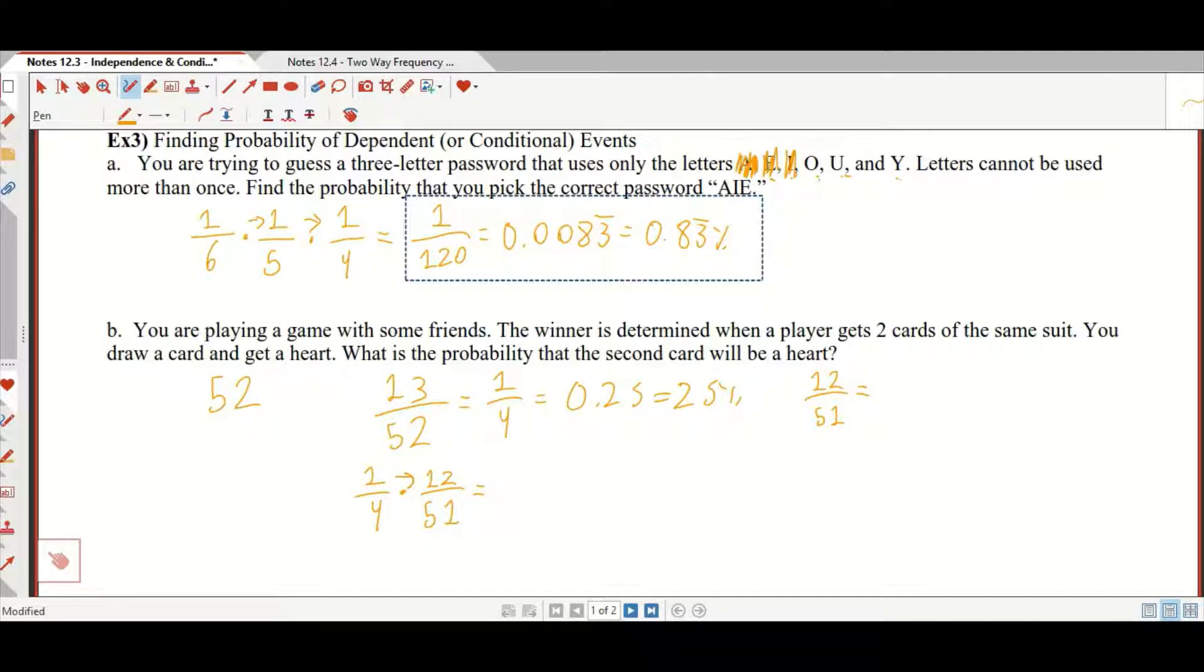And we multiply straight across. Let's cross reduce there if that's okay. That's 3, 1. So that's 3 out of 51. If you hate that, just do 12 over 4 times 51, which is 204 and reduce, you'd still get 3 out of 51. So I guess actually I already answered the question. The probability that the second card will get a heart is 12 out of 51.